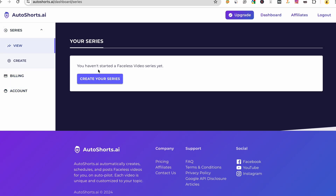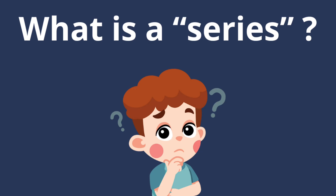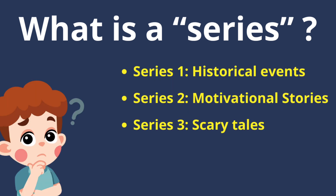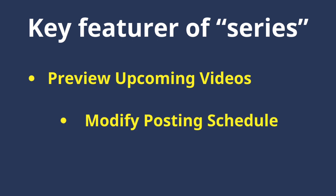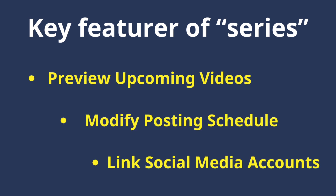Now let's learn how to make a short video. Start by clicking on Create Your Series. A series is a collection of themed videos designed to keep your audience engaged. With Auto Shorts AI, you can effortlessly create and manage multiple series on various topics such as historical events, motivational stories, or scary tales. Key features include: preview upcoming videos, modify posting schedule, link social media accounts, expand your reach, and grow your channel by creating diverse series that attract a broad audience.